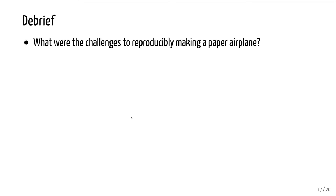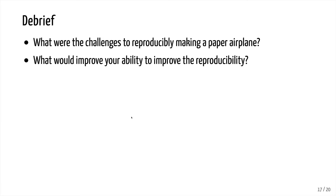Hopefully this was useful in thinking about reproducibility. What were some of the challenges to reproducibly making a paper airplane? Perhaps you found you had to be specific about the shape of the paper. Perhaps you had to think about how do you describe the pointy end or the shape of the airplane at different stages. You might have a mental image of what the plane looks like whereas others don't have that same image. What could improve your ability to improve the reproducibility? Well, you could embed pictures in your readme file — if you provided more of a pictorial description of the method, that would overcome a lot of problems.